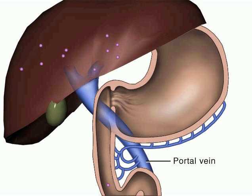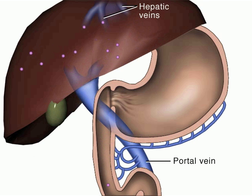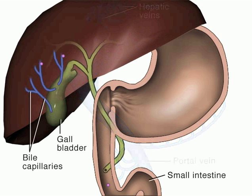Once absorbed in the blood, the drug molecules travel through the liver via the portal system. Some drugs are immediately metabolized in the liver — this is called first-pass metabolism.